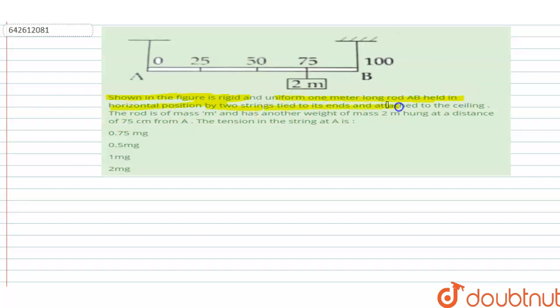A string tied to its end and attached to the ceiling. The rod is of mass M and has another weight of mass 2M hung at a distance of 75 centimeters from A. The tension in the string at A is?